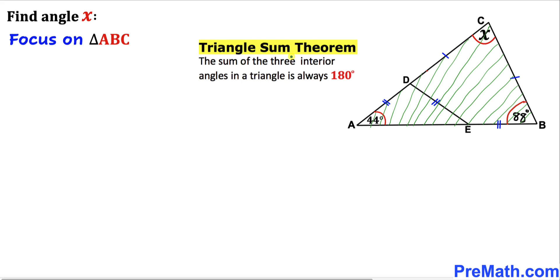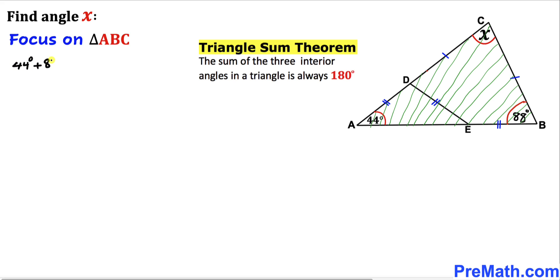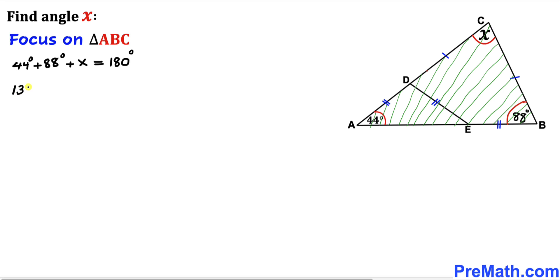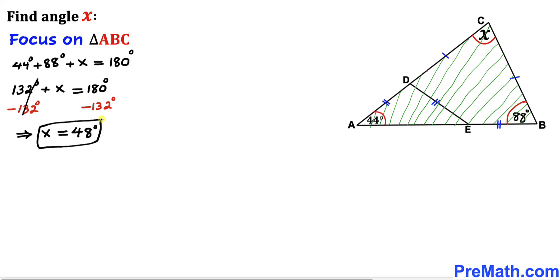For our final step, let's focus on the big triangle ABC and recall the triangle sum theorem: the sum of three interior angles in a triangle is always equal to 180 degrees. So 44 degrees plus 88 degrees plus angle X must equal 180 degrees. That gives us 132 degrees plus angle X equals 180 degrees, so angle X turns out to be 48 degrees.